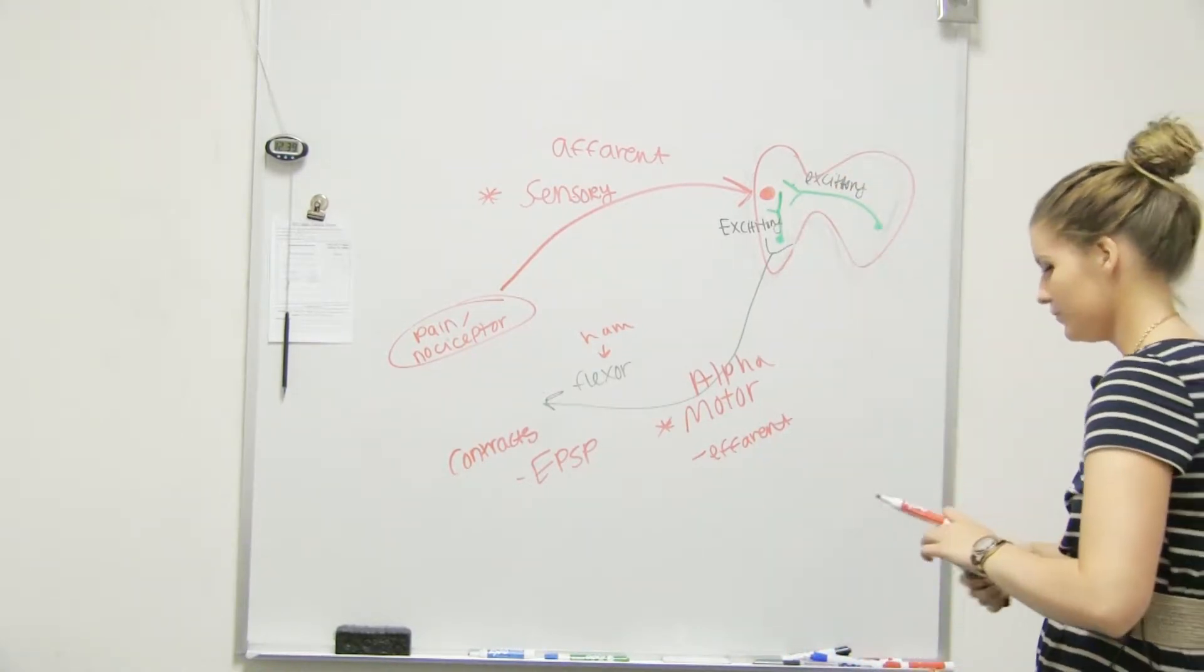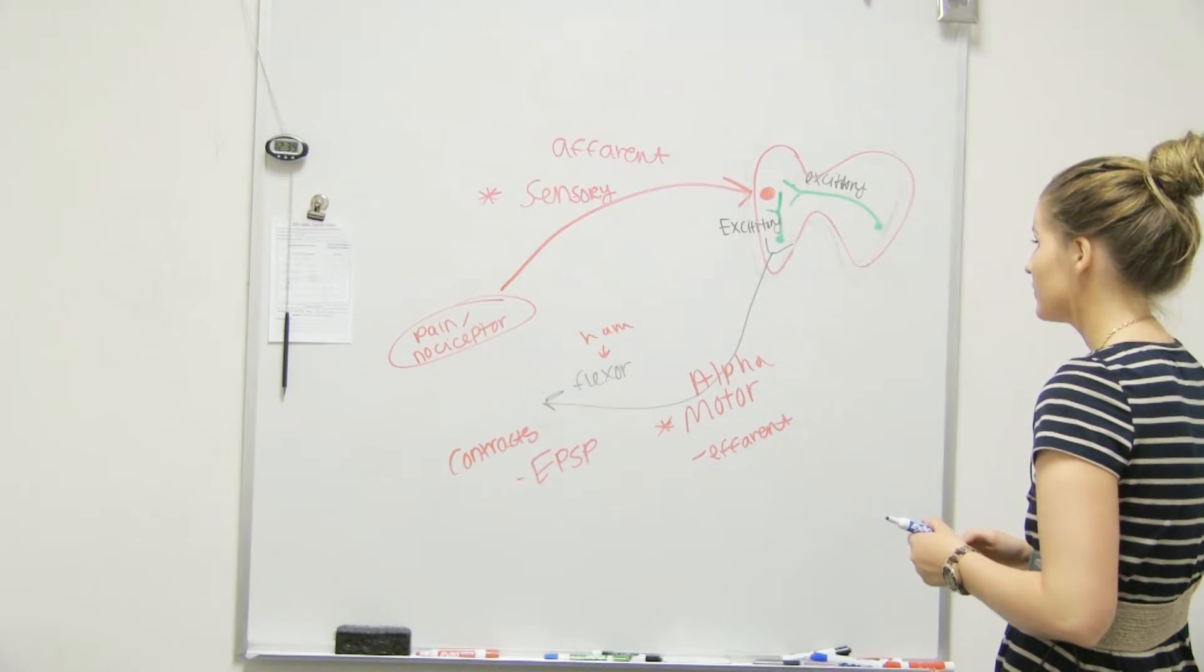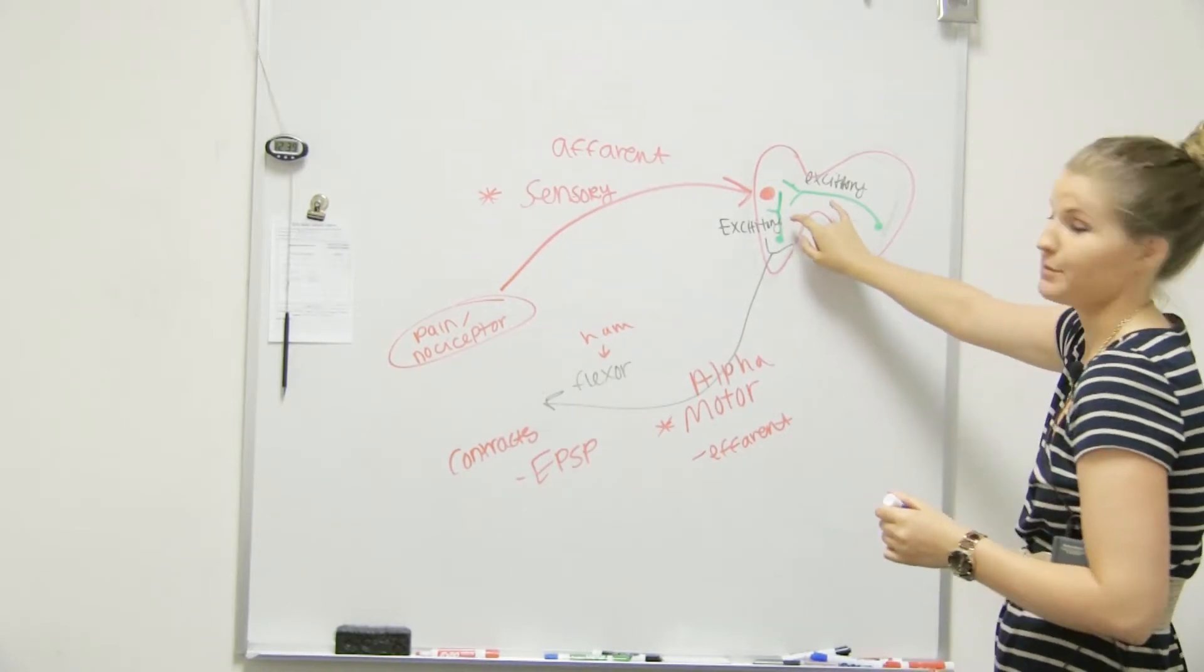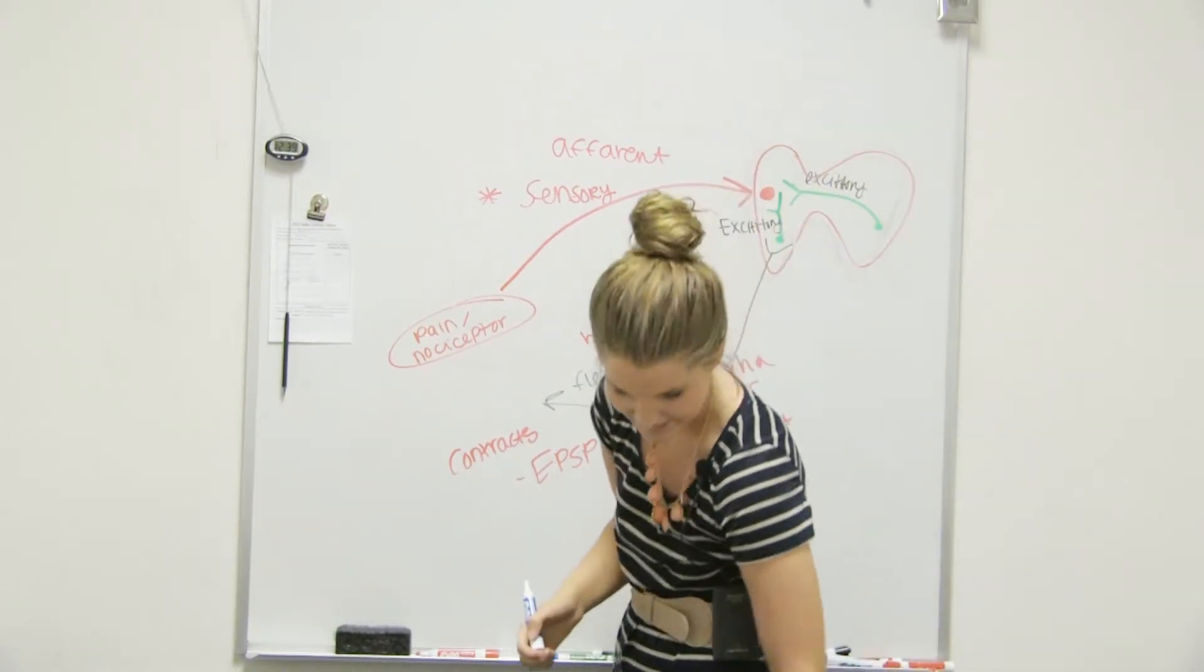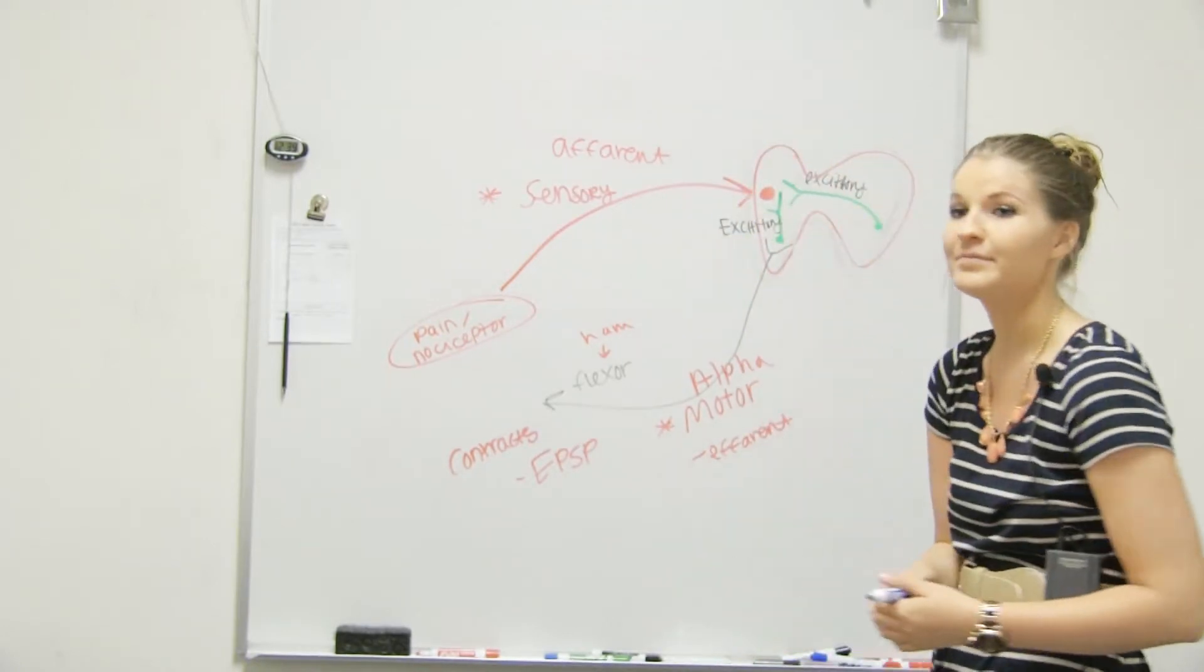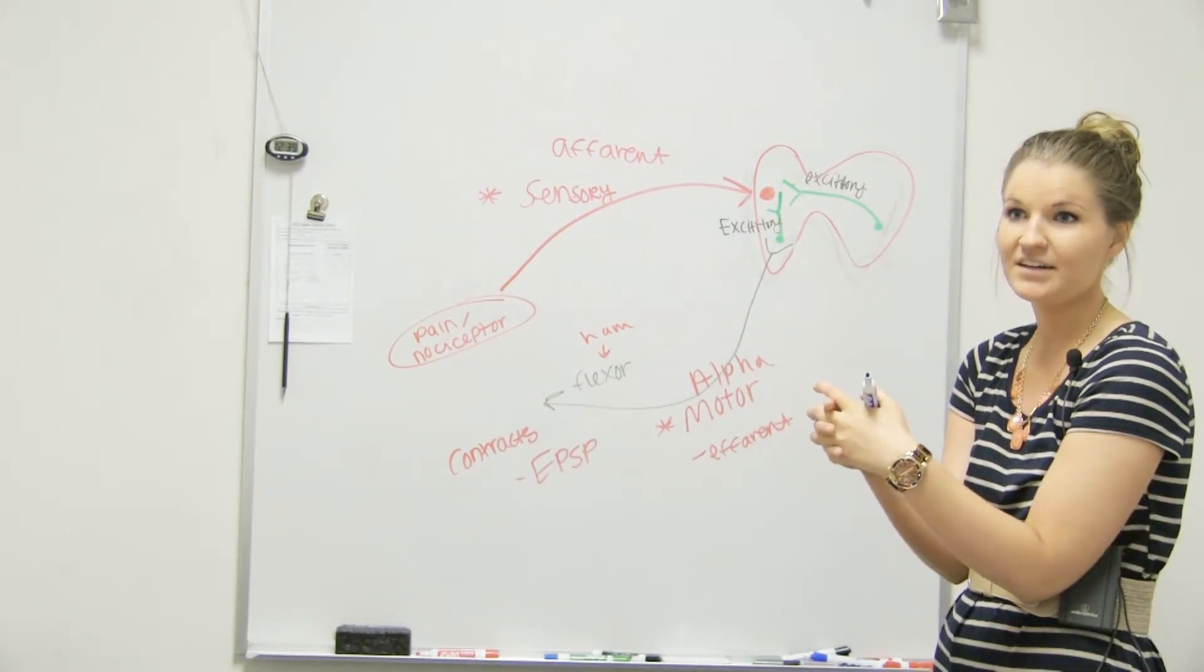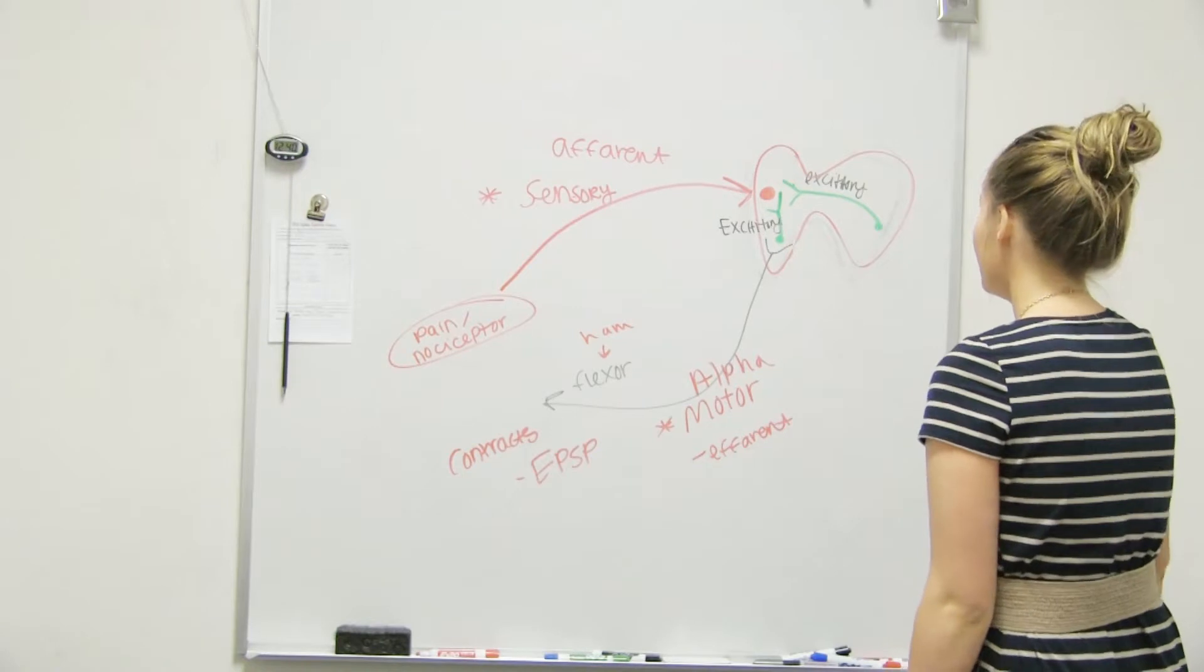Question. So technically there are three interneurons at work here in the sense that you've got the inhibitory interneuron as well that's relaxing the quad muscle. So if they ask you on the test for the withdrawal reflex with crossed extensor, it's just going to be those two. But in reality, that's how they all work because you would want this one to contract, this one to relax, and this one to contract. That was my question. So it's perfect. But on the test, unless they compile all the withdrawals together, then you would say that. But most likely they'll just ask you for the specific one.